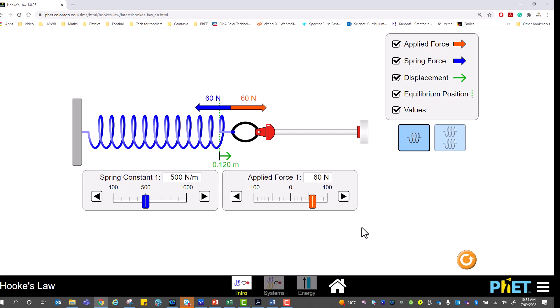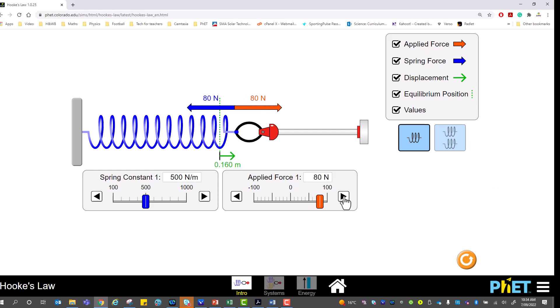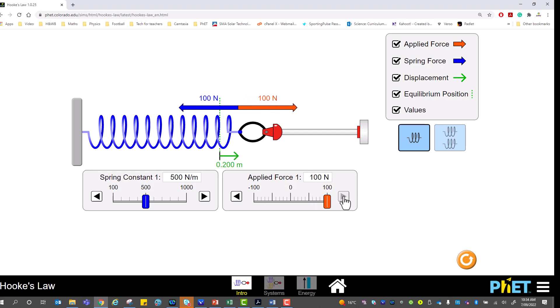40 gives an extension of 0.08, 50 gives 0.1 of a meter, 60 gives 0.12, 70 gives 0.14, 80 gives 0.16, 90 gives 0.18, and 100 is 0.2 of a meter. Now obviously if you're using a different spring constant then that changes the amount of extension. A relatively high spring constant means you require greater force to stretch it, and a low spring constant means you'll require less force.